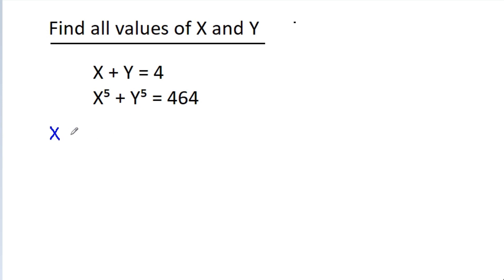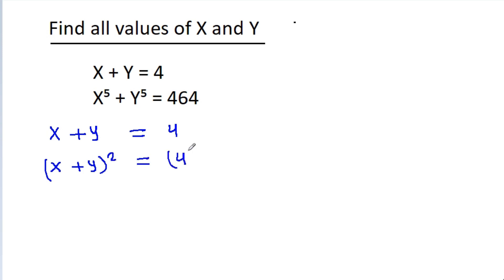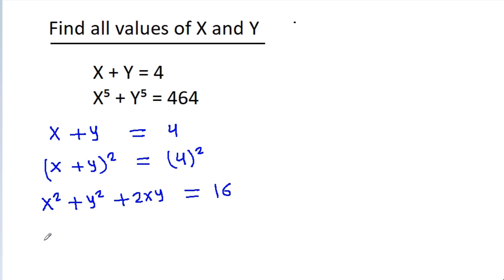We have x plus y is equal to 4. If we square both sides, then x plus y whole square will be equal to 4 square, which gives x square plus y square plus 2xy is equal to 16. So x square plus y square is equal to 16 minus 2xy.